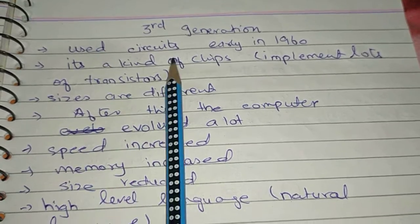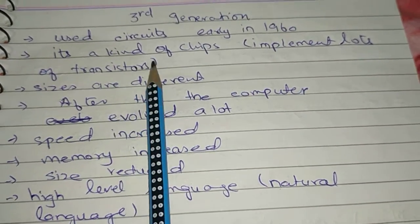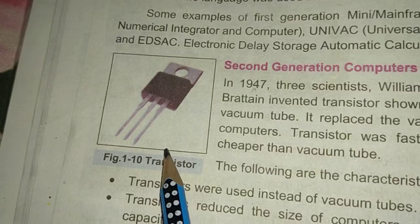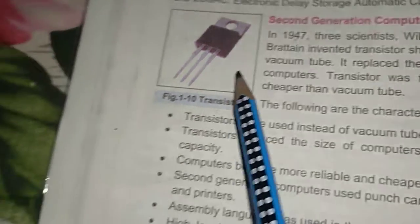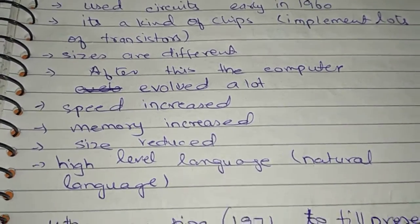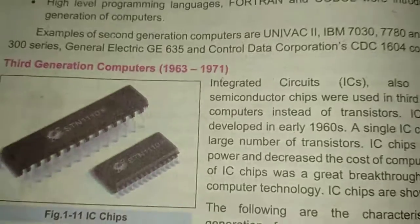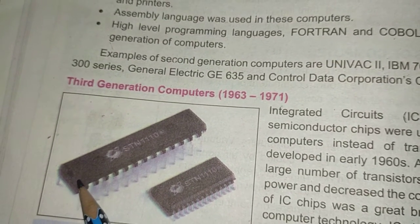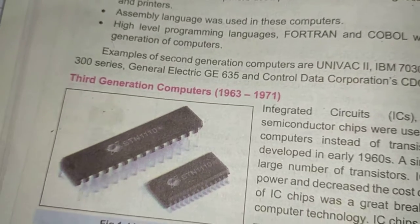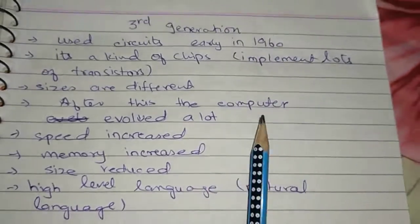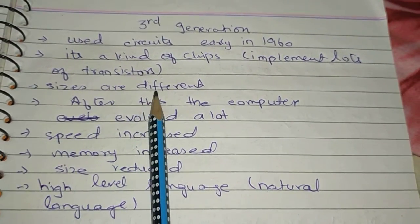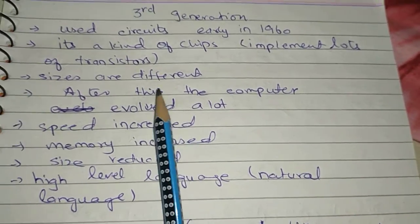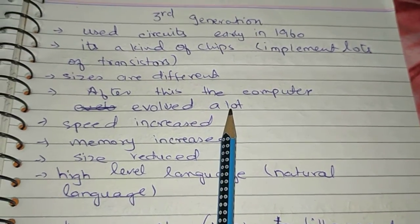Third generation computers used integrated circuits from the early 1960s. These chips contained thousands of transistors — you can see they are very small in size. The integrated circuits are small, with thousands of transistors implemented on a single chip. This is what made the sizes different compared to previous generations.